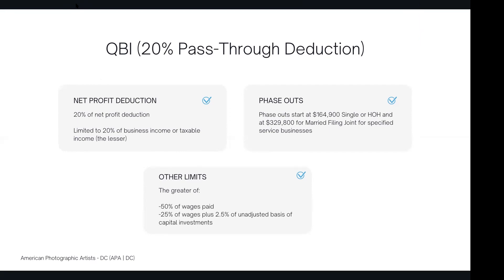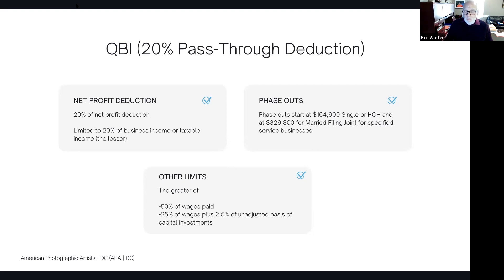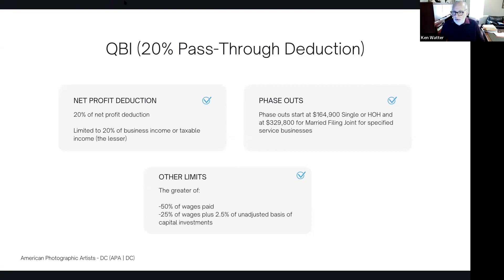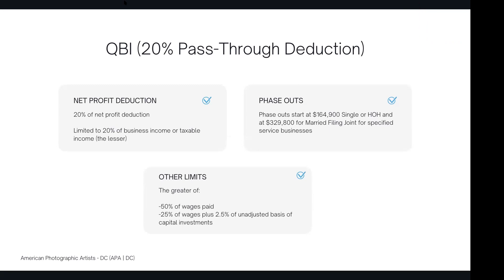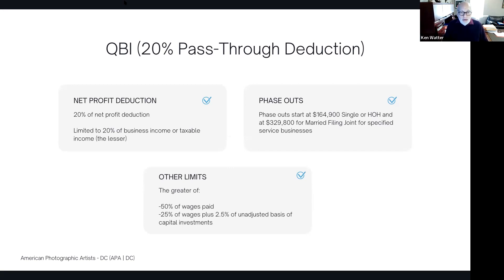There might be some choices made not to use Section 179 but to stretch out the depreciation. That can happen when your income is not so high — we don't want to waste the deduction on a low-income year when the tax rate is lower. We might rather have those deductions later once you recover. You definitely want to look at that depreciation schedule every year. If there's equipment you've gotten rid of, we want to dispose of that too. If there's still a cost basis that hasn't been depreciated, you'd get a deduction for the disposal.